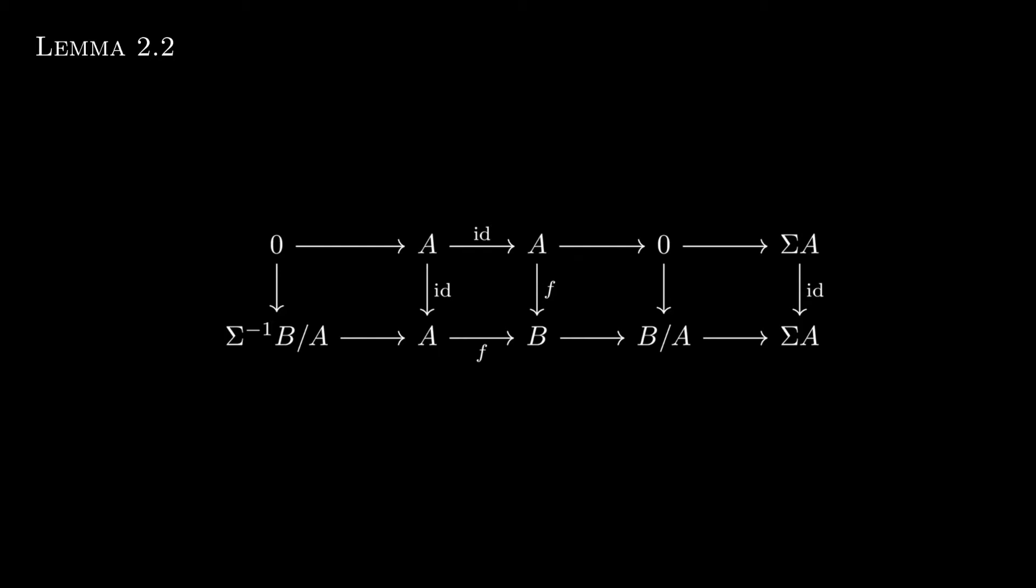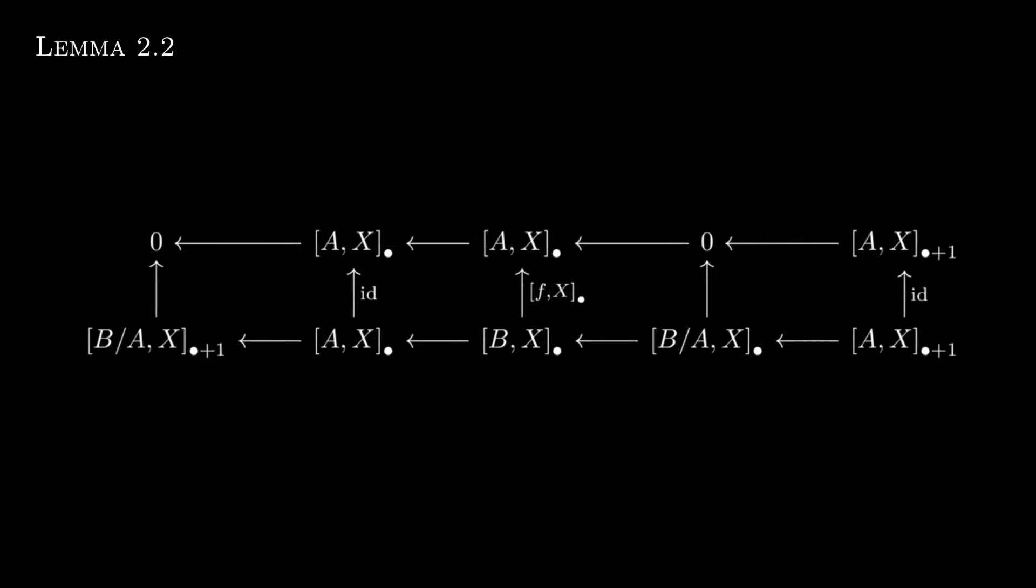So here comes the really important property of the stable homotopy category. It's the fact that applying a graded abelian group functor, e.g. something, comma, X bullet, turns cofiber sequences into long exact sequences. So applying that here gives us this diagram, where the arrows are flipped because of contravariance. Now I want you to see something. If the fourth vertical morphism from B/A, X bullet to 0 is an isomorphism, well, then the first vertical morphism is also an isomorphism. The second and last vertical morphisms are by construction isomorphisms. So by the five lemma, the middle vertical morphism must also be an isomorphism.